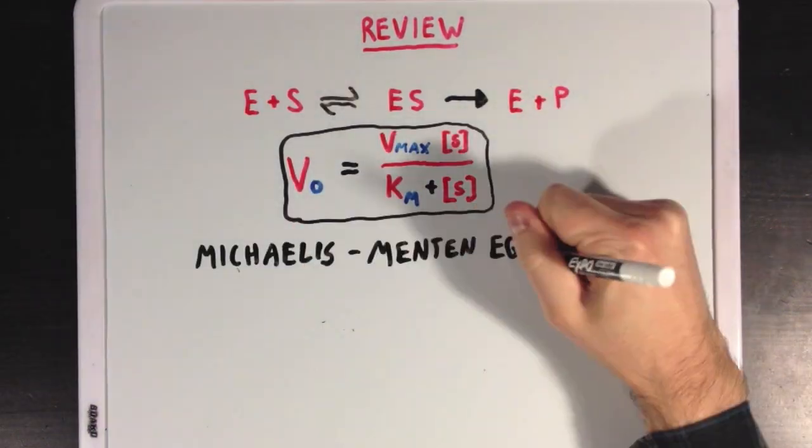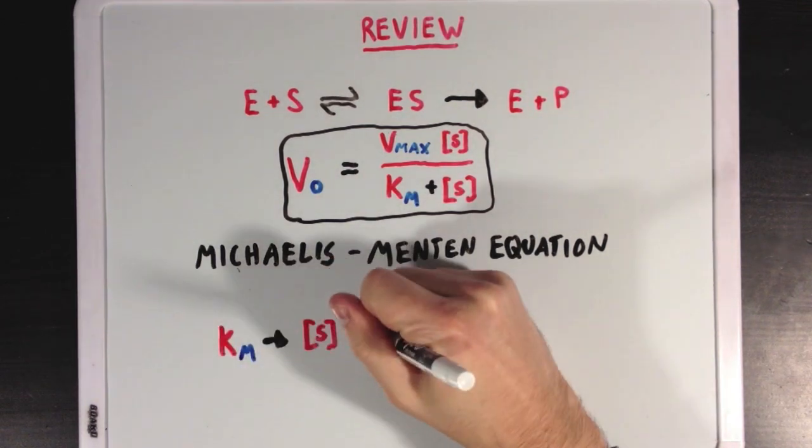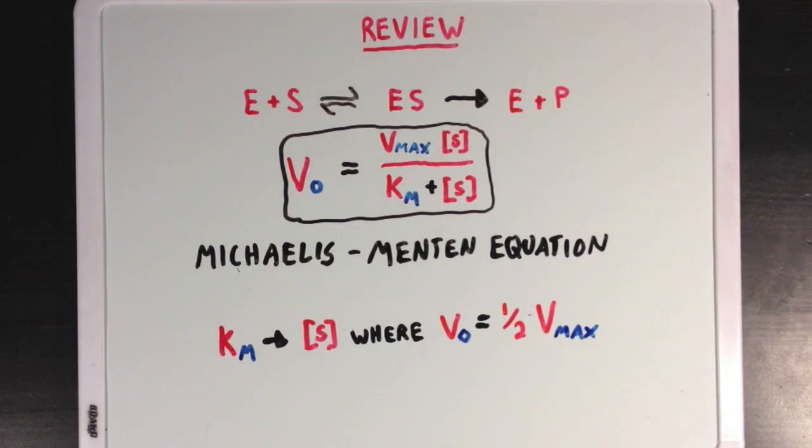And using this idea, you can derive the Michaelis-Menten equation, which is useful for quantitatively looking at how enzymes behave kinetically. Also remember that within that equation we have the Km, or Michaelis constant, which is defined as the substrate concentration where the speed of product formation is at one-half of its max value.